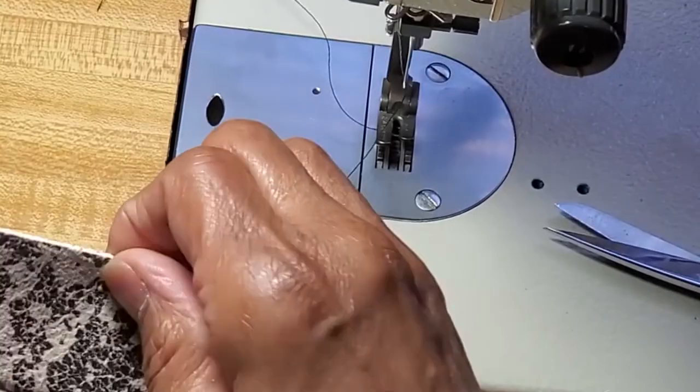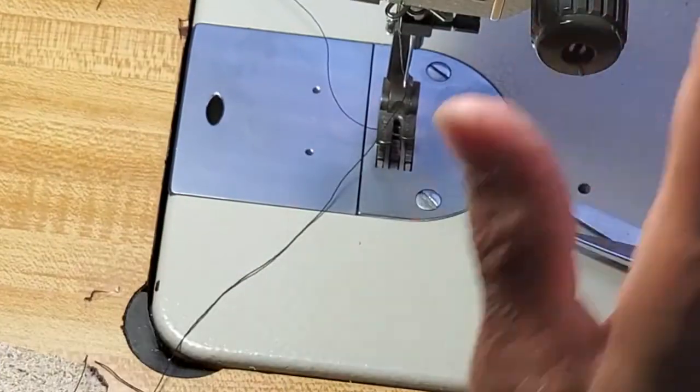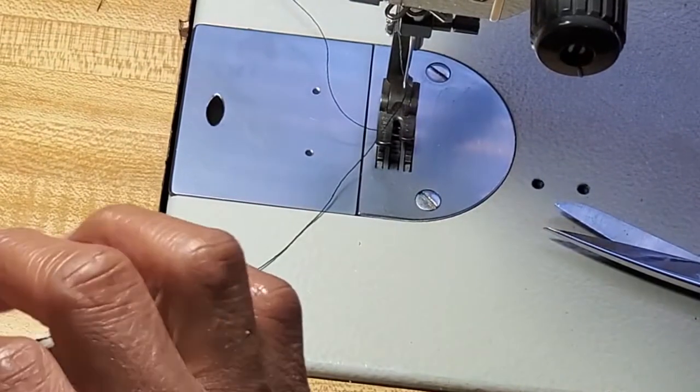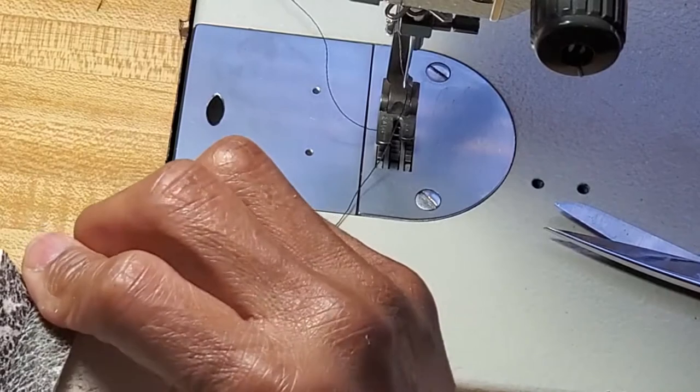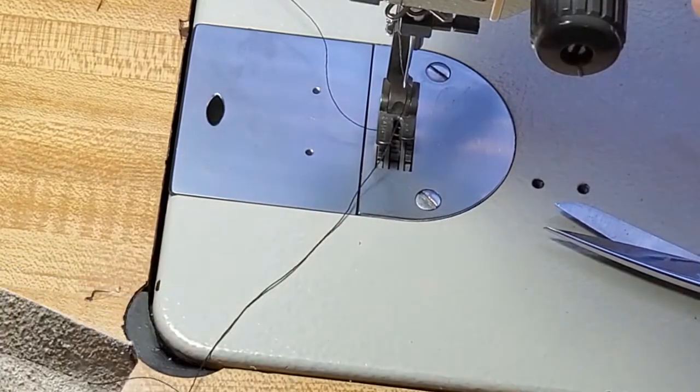Then cut it again about a quarter inch. So again, this is the industrial machine. First we did the domestic machine, we did the industrial machine.